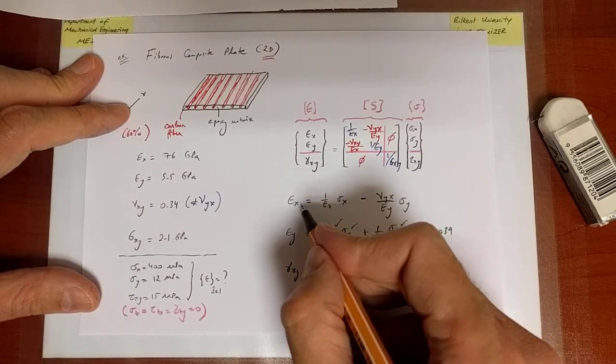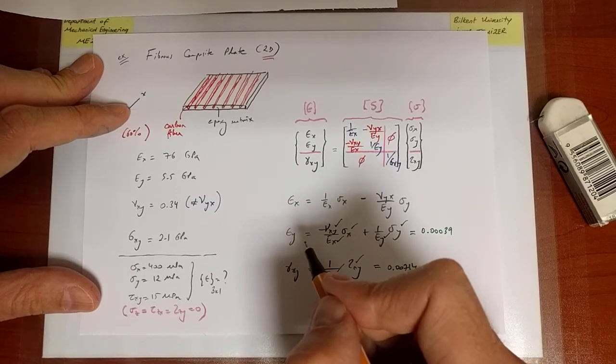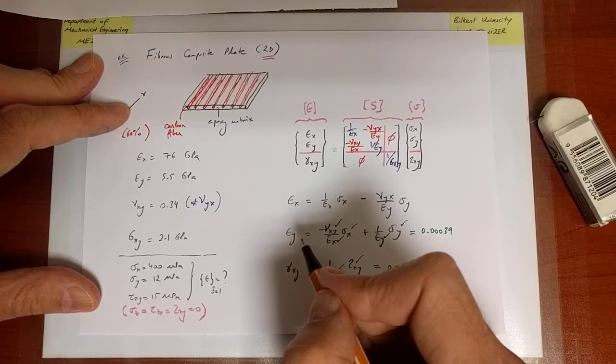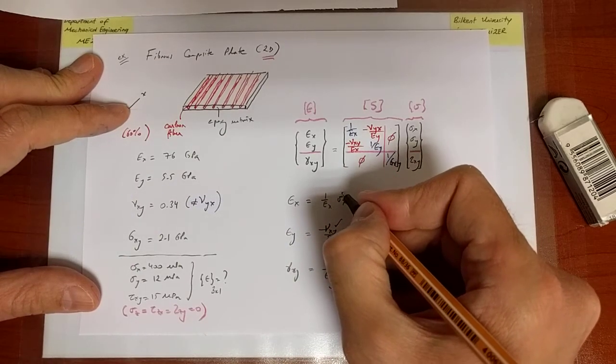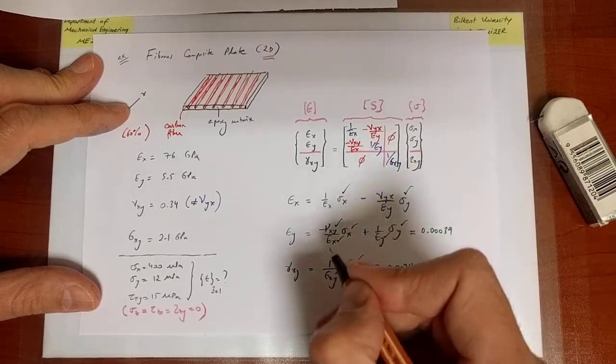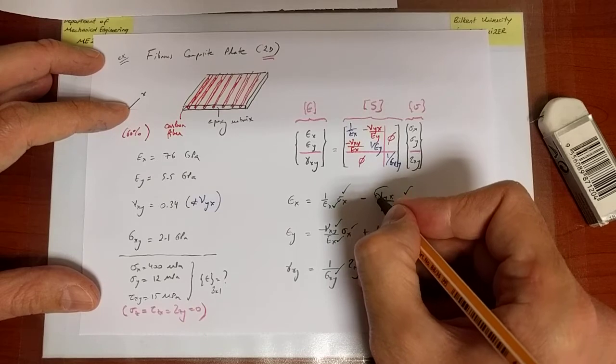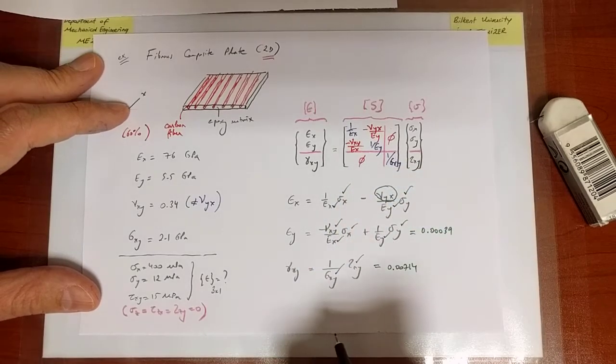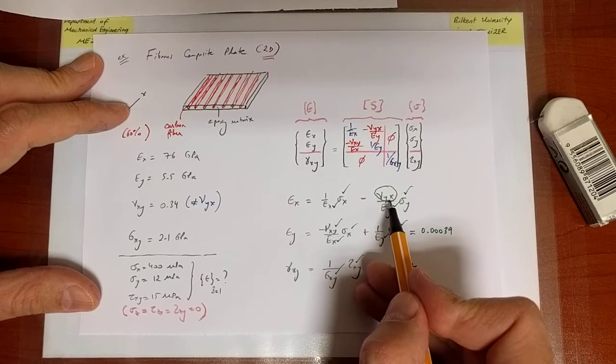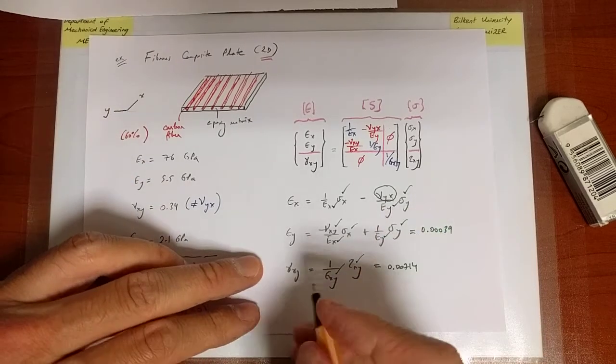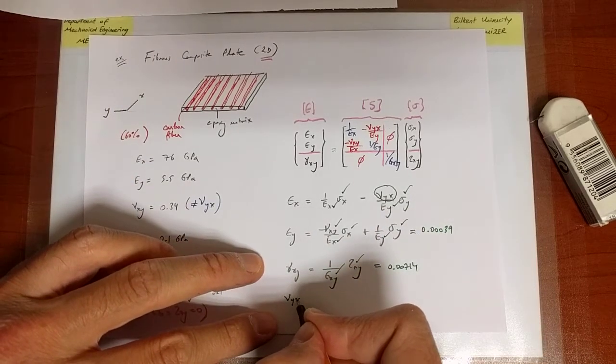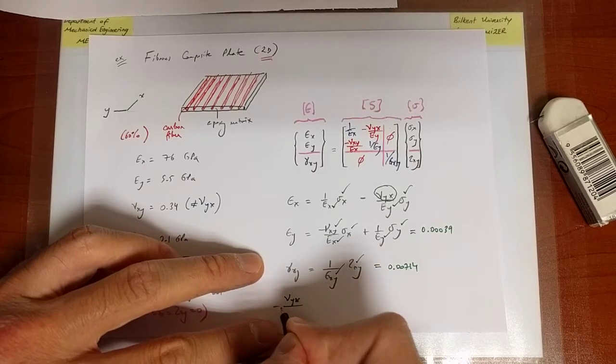I need the value of sigma_x which I have, sigma_y which I have, Ex and Ey I do have, but I don't know what nu_yx is. Now you can extract the value of nu_yx. How? Well, I'll put the minus sign as well. I know that this matrix is symmetric.